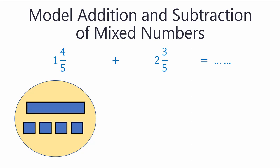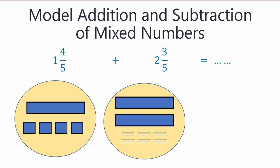So I will divide a whole into fifths and take only four fifths. Let's do the same with the second mixed number. I need two wholes and I will take three fifths. Okay, so these are the numbers that we need to add.